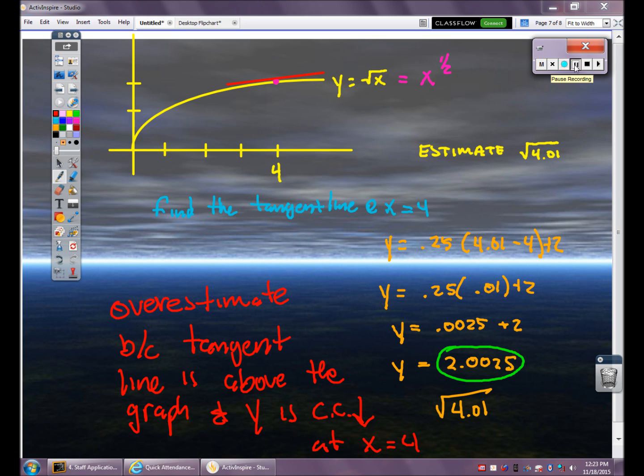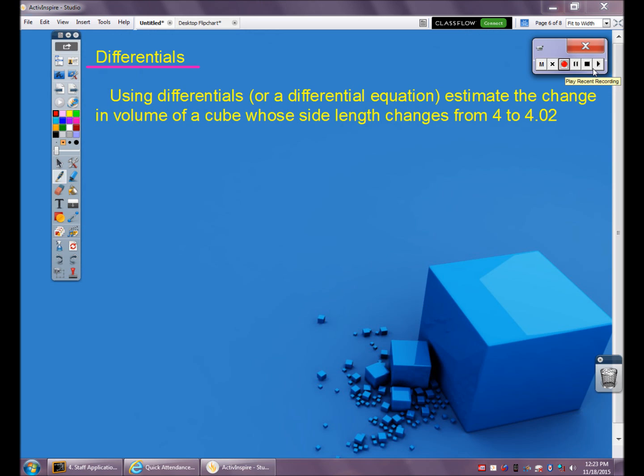All right, so let's go ahead and move on to differentials. If I had a cube whose side lengths were 4 by 4 by 4, I could figure out the volume 4 times 4 times 4, which is 64. And I guess these would be units cubed. If I wanted to change that side length from 4 to 4.02, what kind of change does that have on my volume? Obviously, it's going to make a bigger volume, but what's the change in that volume going to be?